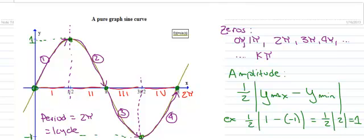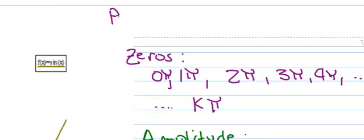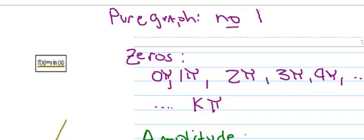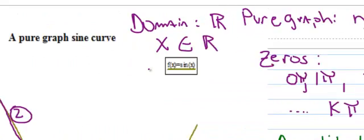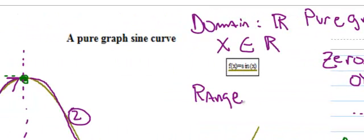The next thing that is on your paper, I think, says pure graph. And what pure graph means is no translations. We'll get into translations shortly, but a pure graph means no translations. We talked about period. The domain: we already know that the domain of the sine curve is all real numbers. We can write x as an element of all real numbers. And the range, so in interval notation, the minimum value is -1, the maximum value is 1.